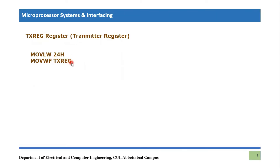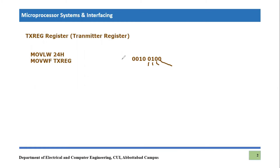The transmit register is an 8-bit register, so it will transmit from the least significant bit side. For example, 0x24 can be written as 8-bit 0010 0100. Transmission will start from this least significant bit side — this bit will be transmitted first, then the next, and so on. It will not transmit from 8 pins simultaneously; rather it will be transmitted from one single pin.